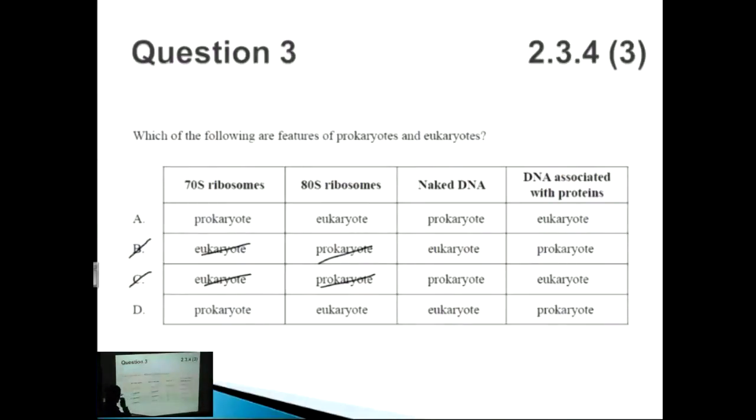Now we have to look at naked DNA as well as DNA associated with proteins. Remember before, back in question one, we talked about DNA associated with proteins is found in eukaryotes. What is that called? Correct, histones. The histone proteins that we find. So this answer is correct. Is DNA associated with proteins in prokaryotes? No. And if you double check, naked DNA with prokaryotes? Yes. With eukaryotes? No. We talked about how eukaryotes have a nuclear membrane surrounding the nucleolus, which composes the nucleus. Therefore, the answer to the question is A.